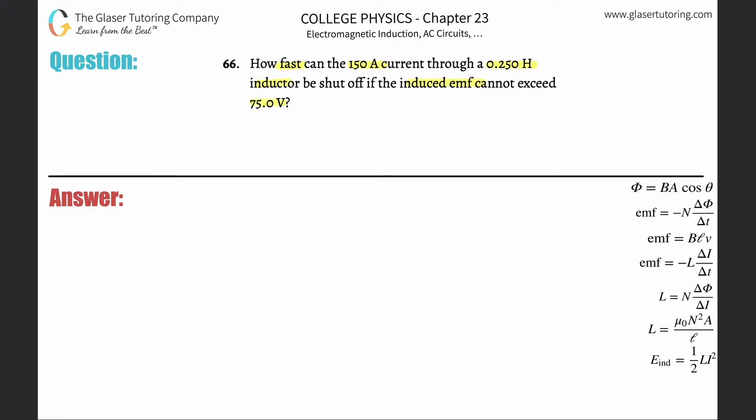So in order to solve this we need the self-inductance formula. It says that the self-induced emf that is produced when there is a change in current over a certain time period is equal to the negative self-inductance value of that particular circuit or system, multiplied then by the change in the current divided by the change in the time.